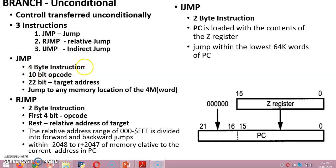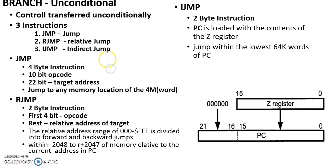Jump is a 4-byte instruction asking the processor to transfer the control — that is, to load the program counter with a desired address unconditionally. The program counter in AVR is 22-bit. In AVR, the program counter is 23-bit.